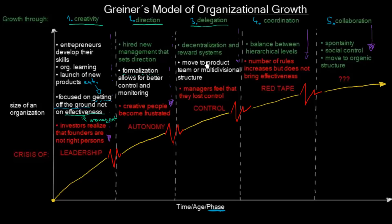In the third phase, there is decentralization and reward systems. We are moving to a product or multi-divisional structure — you simply decentralize and give at least some part of responsibility and authority to the creative people at lower levels within your organization. However, managers start to feel that they have lost control. In the second phase we were growing thanks to formalization and direction, and now we have decentralized, so managers feel they are losing control over the company. This is called a crisis of control.